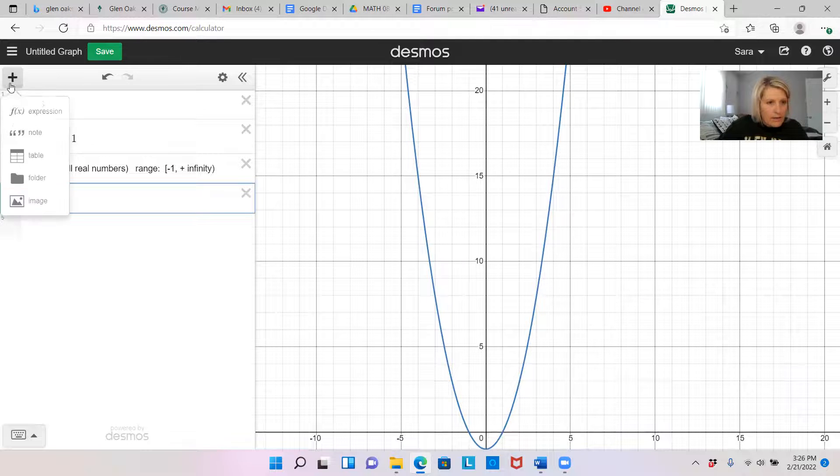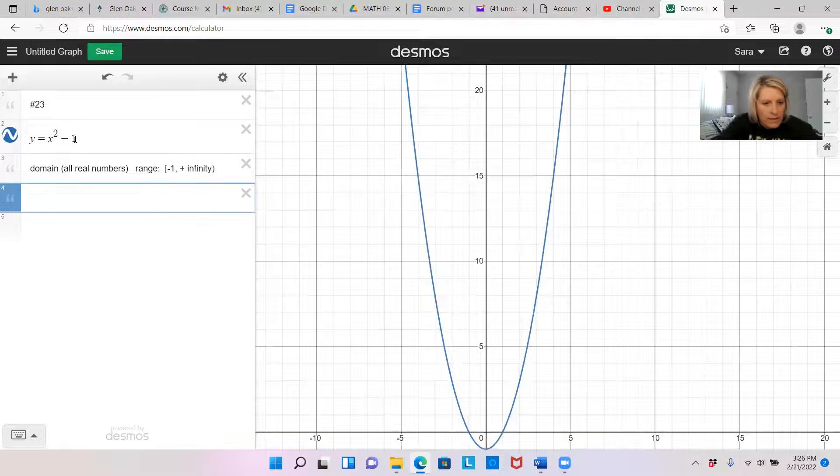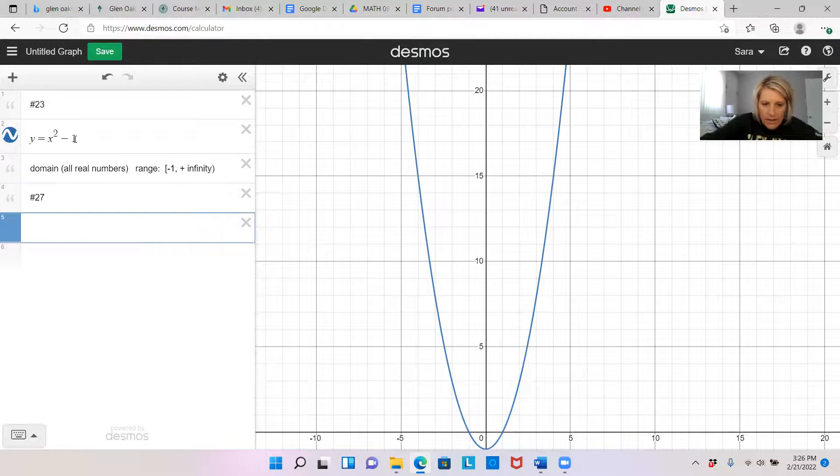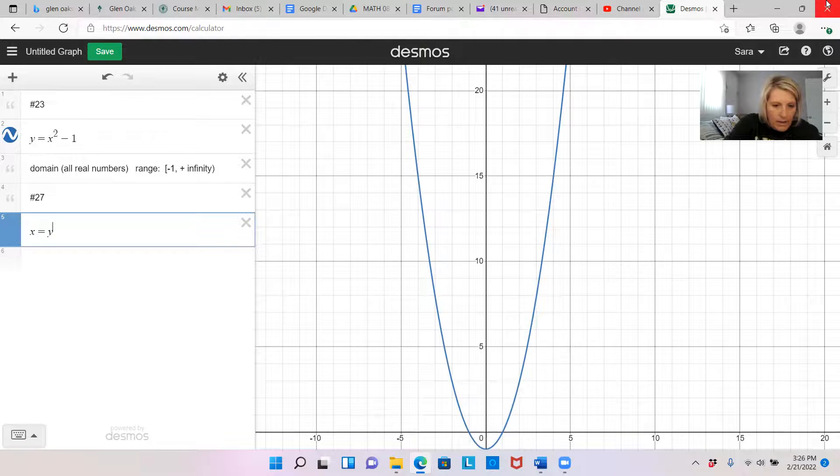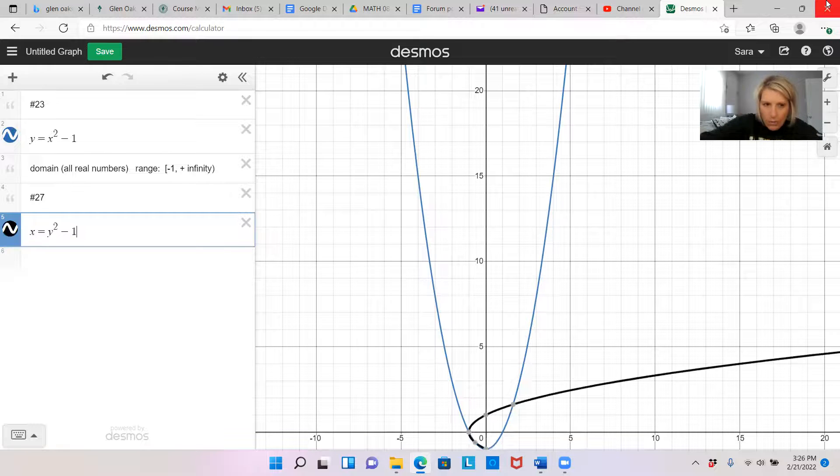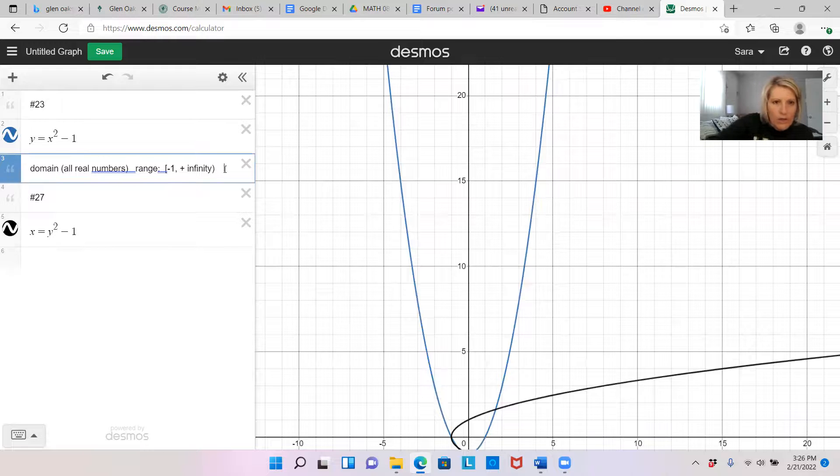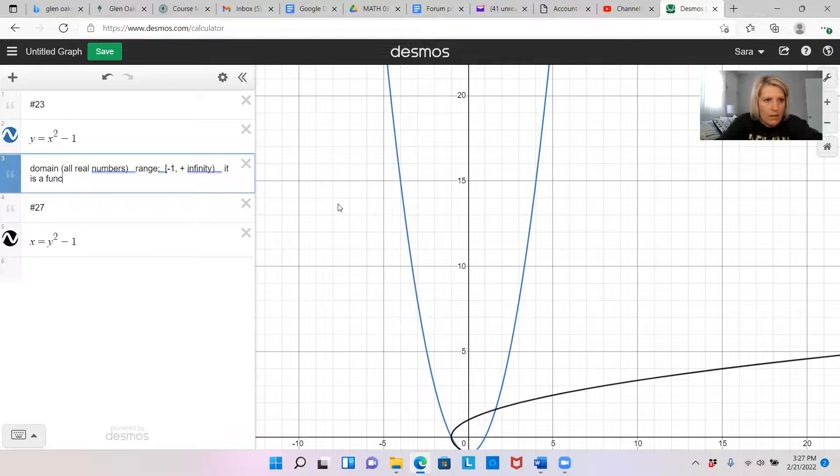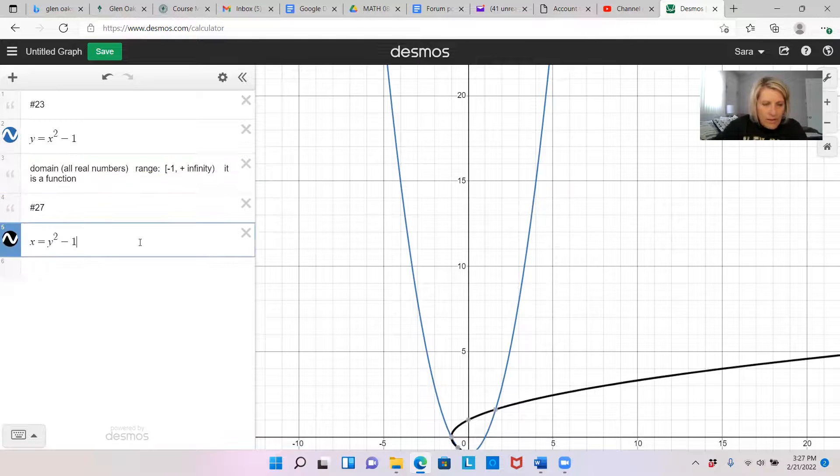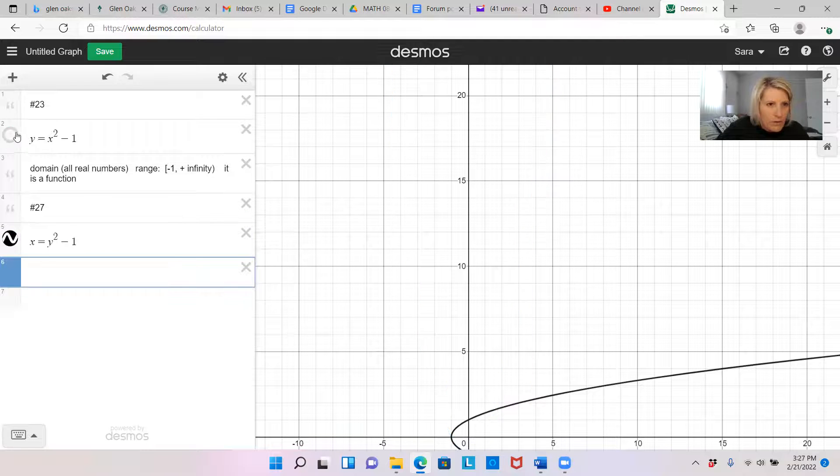Okay. And now let's look at number 27. And that is y is equal to, oh, this one is x. It's written a little different, x is equal to y squared and go down and do minus one. Now let's go back to 23 for just a moment. I want to note here, if we do that vertical line test, it looks like it is a function. So let's just mark that is a function.